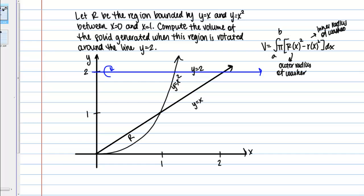Why does it make sense to use the washer method in this case? We're rotating around a horizontal line — y equals 2 is a horizontal line. In that sense it is similar to the x-axis; it's just shifted. The x-axis is the line y equals 0, and this is the line y equals 2. If I want to use the washer method, I'm going to be integrating with respect to x, just like I would if I were revolving around the x-axis.